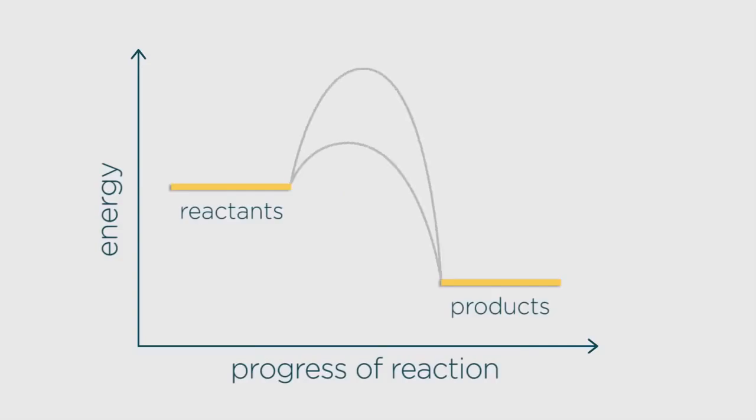Here are the two pathways for a reaction. The blue pathway is the energy profile for the reaction without the catalyst, and the red pathway is the energy profile for the reaction with the catalyst. You can see here that with the catalyst the activation energy is lower.